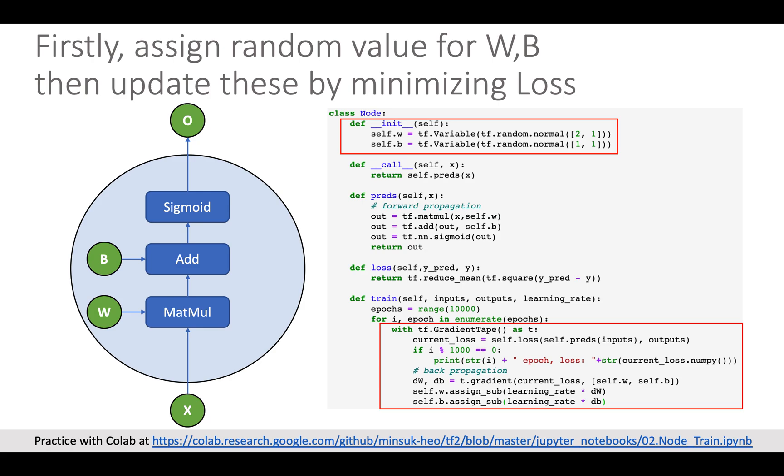You can easily implement this in the TensorFlow too. Here is a code snippet where we initialize random values for the weight and bias and train. Train is basically the forward propagation and the back propagation. And the back propagation updates weights and bias by minimizing loss using gradient descent.